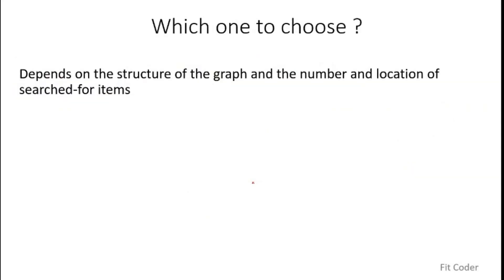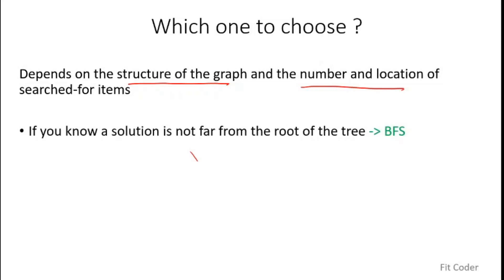Now that we've studied the important characteristics and differences of both traversals, how do we decide which algorithm to choose for a given problem? That depends on the structure of the graph and the location and number of items being searched for. If we know the solution is not far from the root of the tree, we should go for BFS. If the solution is at distance one or two from the root node, BFS will find it sooner since it does a layer wise search and traverses all children in one layer.